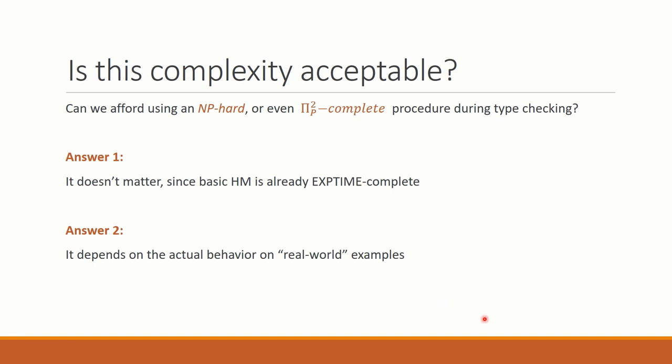The question that remains is, is this complexity acceptable? Can we afford using an NP-hard procedure during type checking? The first answer, the theoretical answer is, well, this doesn't matter because the basic ML system is already EXPTIME-complete, which is more complex than NP-hard. But this is not completely satisfactory. So we have a second answer. Well, actually, it depends on the actual behavior on real-world examples. And for this, I will hand over back to Magnus Madsen, who will show you the experimental evaluation.